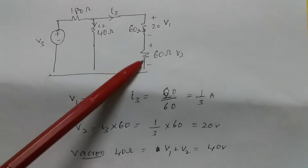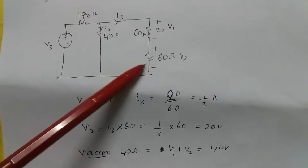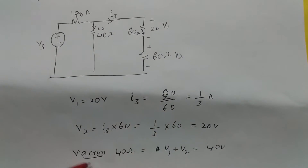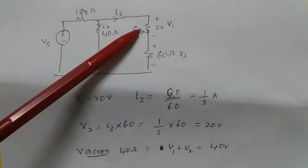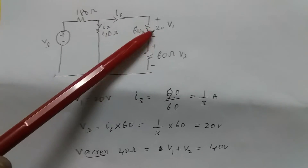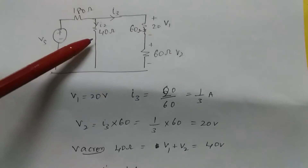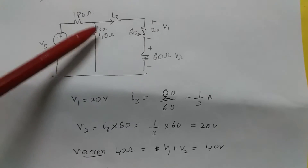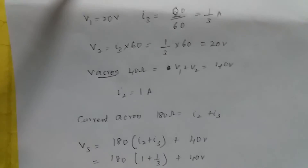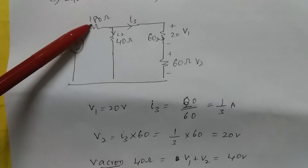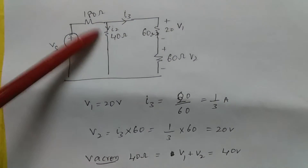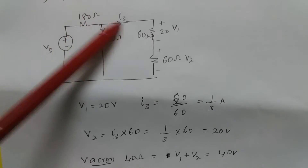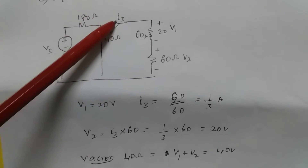V2 is I3·60 = 20 volts. The voltage across the 40 ohm resistor is V1 + V2 = 20 + 20 = 40 volts. So I2 = 40/40 = 1 amp. The total current I equals I2 + I3, since the current from the source splits into these two branches.